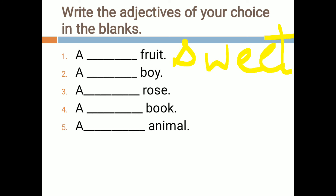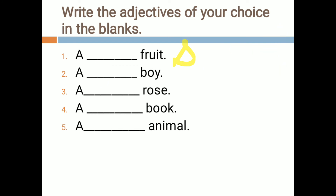The second blank is 'a dash boy.' We can define the height of the boy, so we can say a tall boy or a short boy — we can write tall or short according to our choice. Thirdly, 'a dash rose.' Roses are beautiful — a red rose. We can write the color of the rose. So we will write 'a red rose' — red is representing the color.